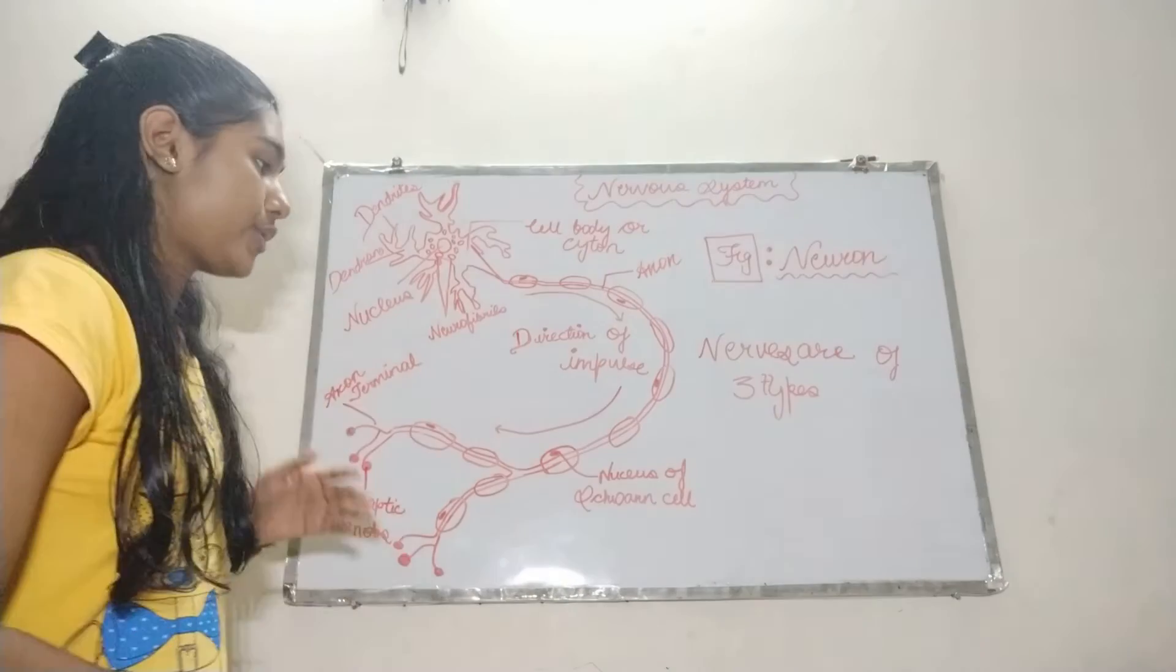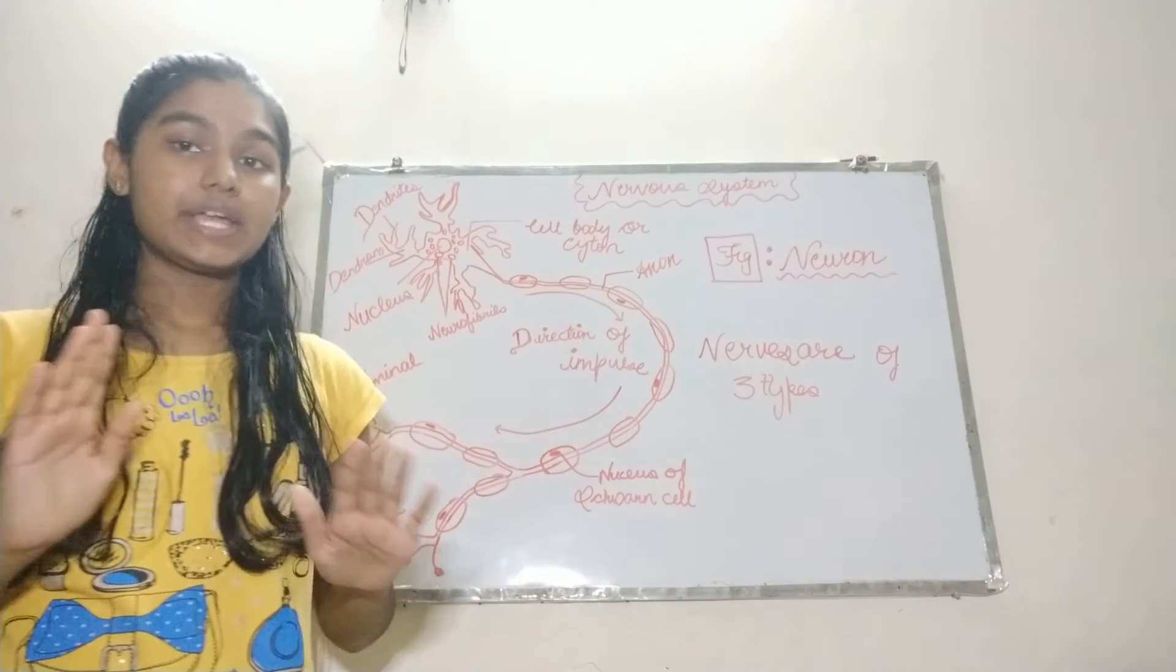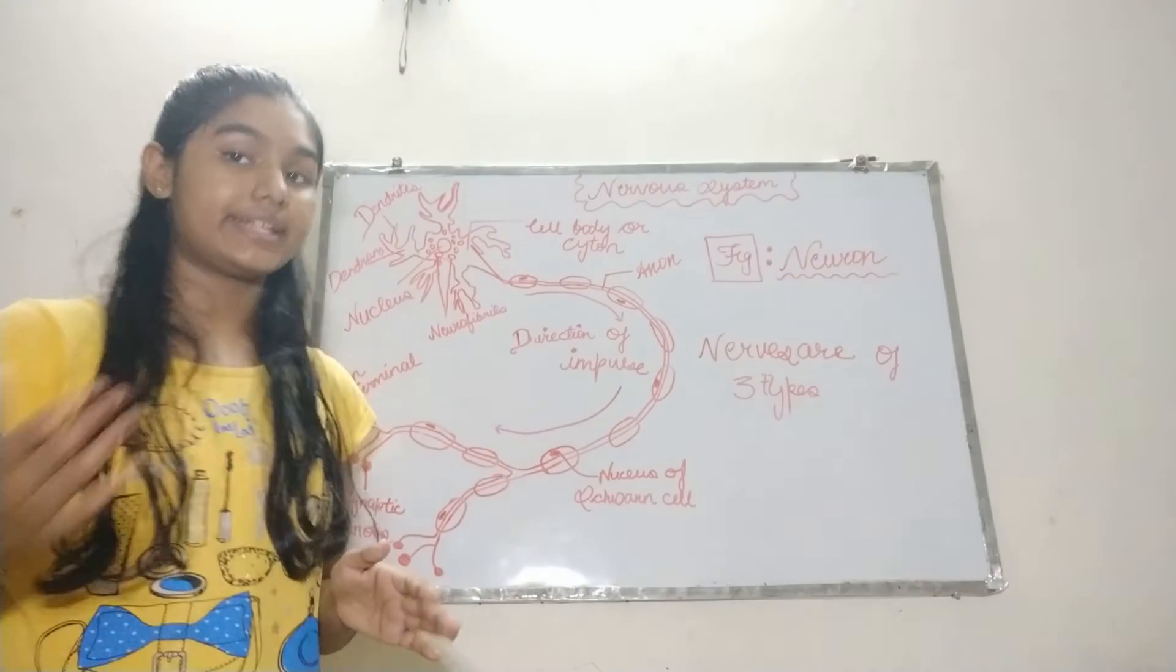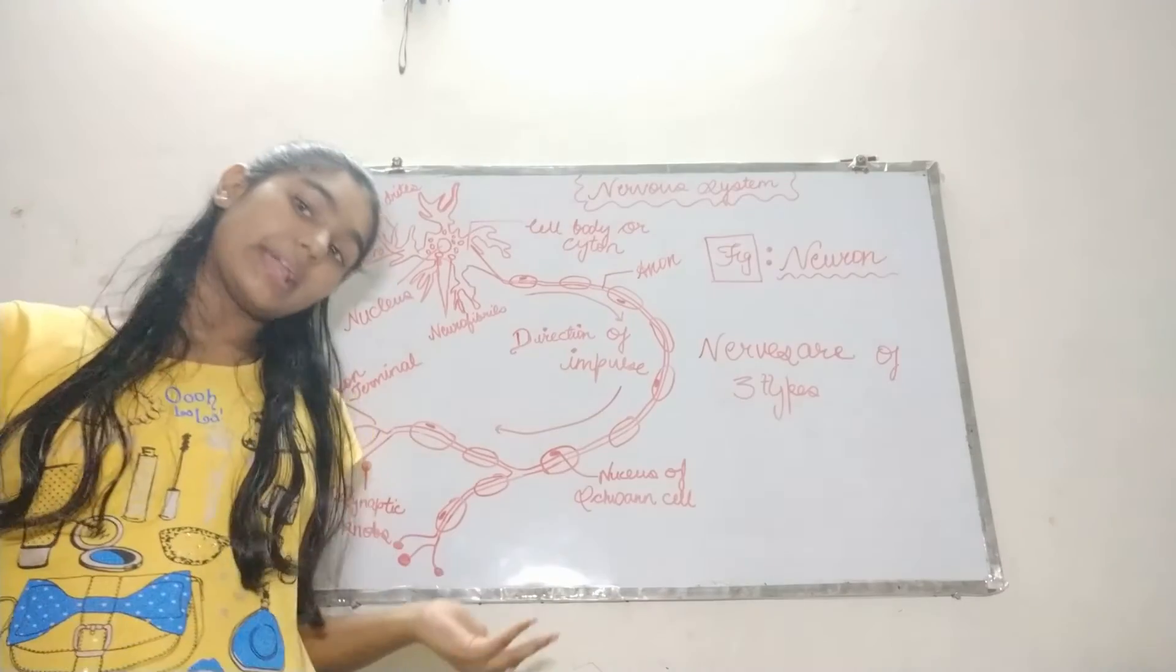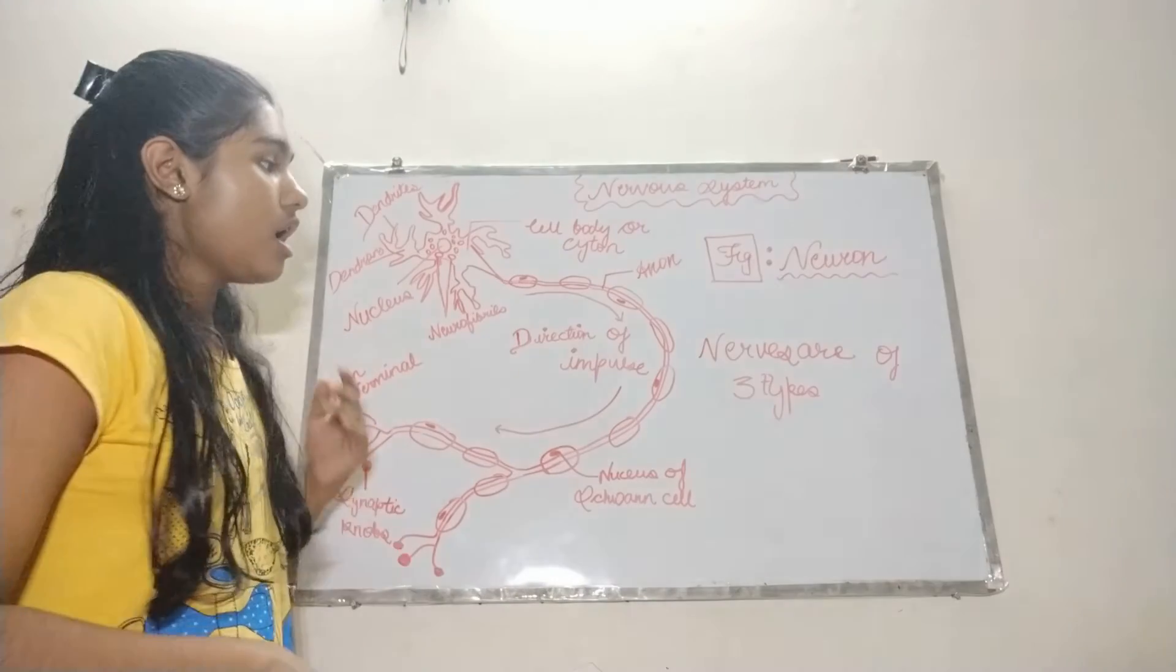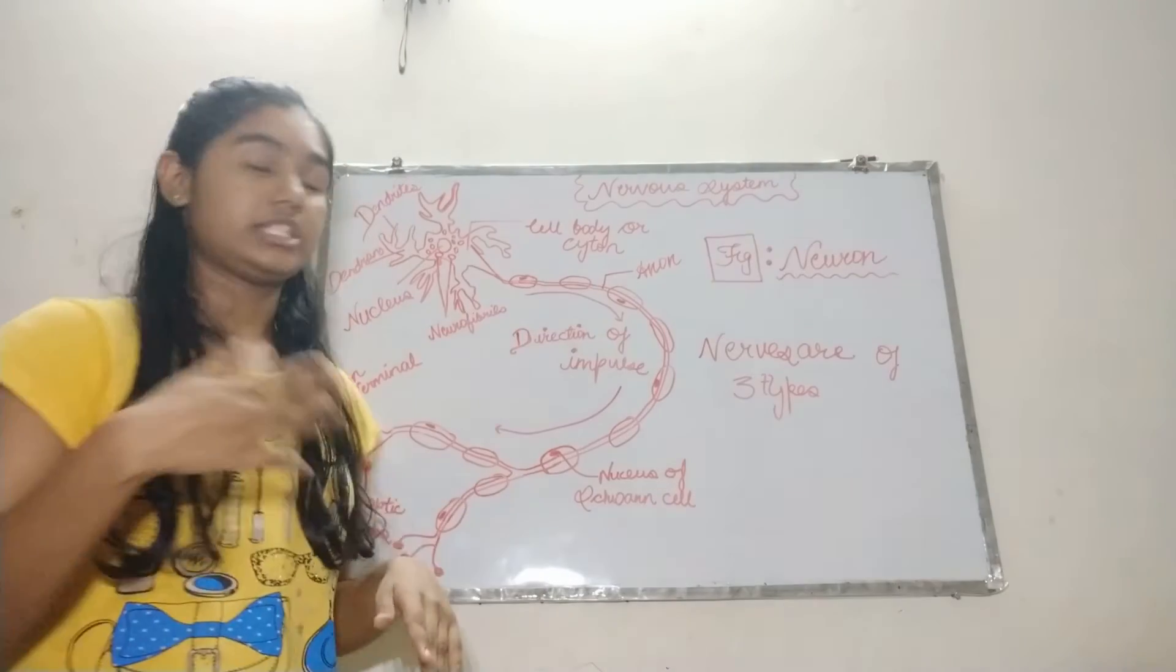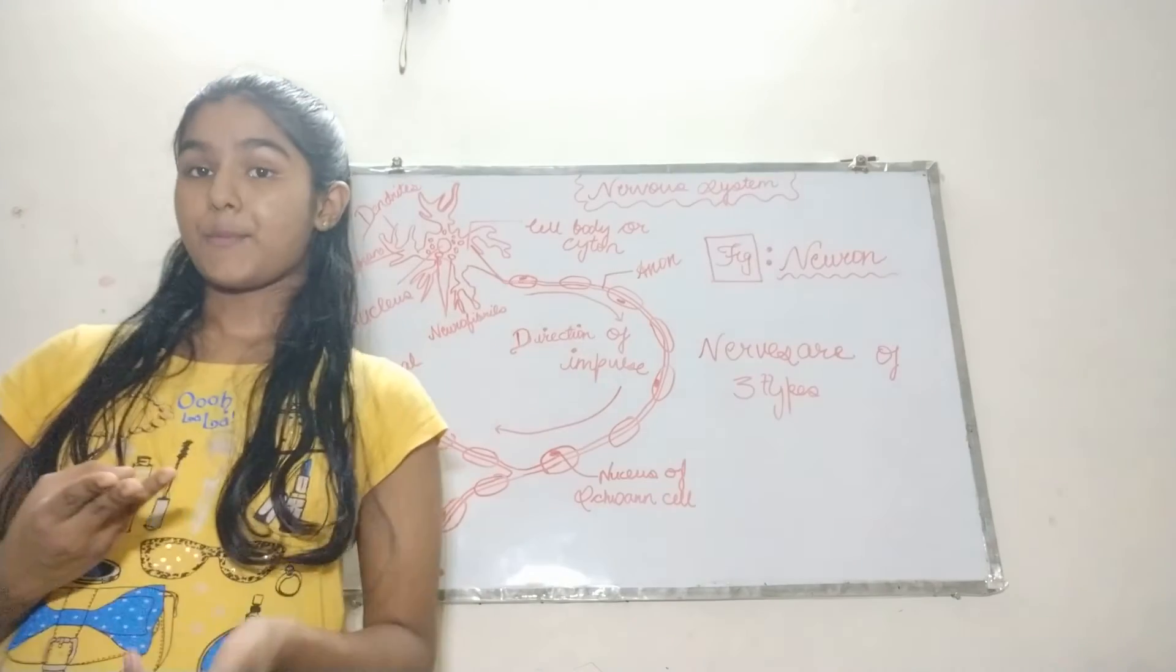Nerves are of three types. First is according to the presence of myelin sheath. If the nerve has myelin sheath, then it is called myelinated nerve, and if it does not have myelin sheath, then it is called non-myelinated nerve. On the other hand, it is also divided into a second category, which is according to function.